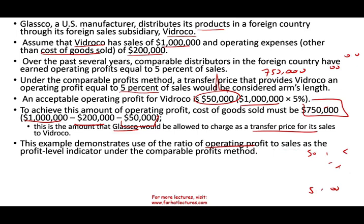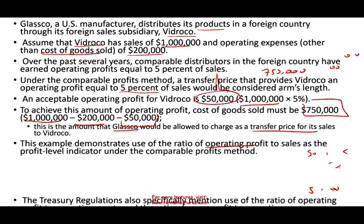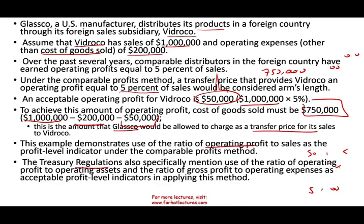The Treasury regulation also specifically mentions the use of the ratio of operating profit to assets, so we could use operating profit divided by operating assets for similar companies. We can also use the ratio of gross profit to operating expenses as an acceptable profit level indicator in applying this method.